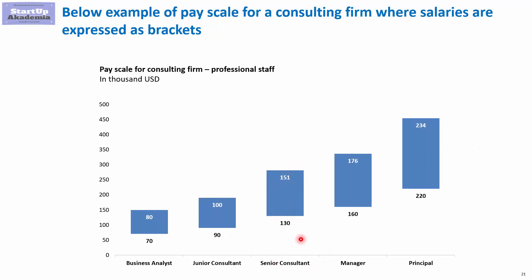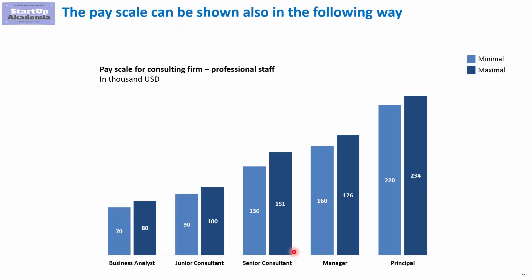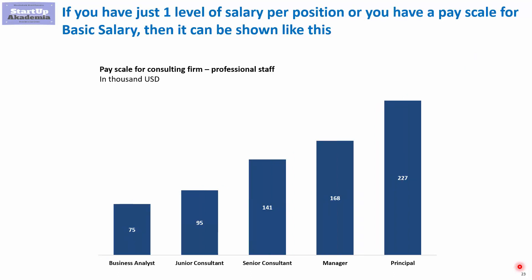For every position there is a bracket showing the minimal and maximal salary. You can also show this in a different manner with two columns — the same data but a different presentation. Finally, in some cases you may have a simplified pay scale with no brackets, just one level — so as a Business Analyst your basic salary is 75,000 and everybody in this position earns that amount.